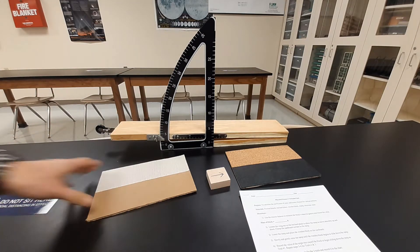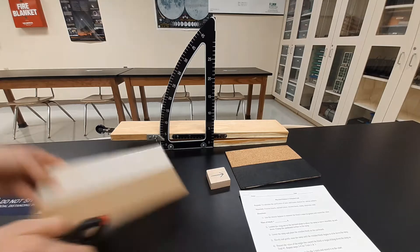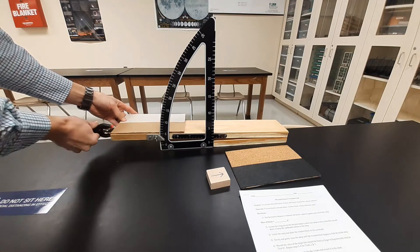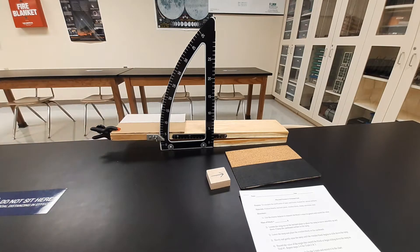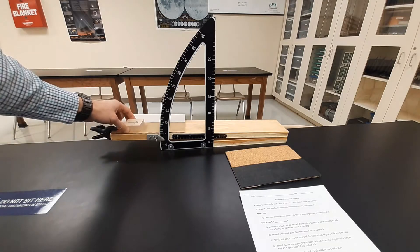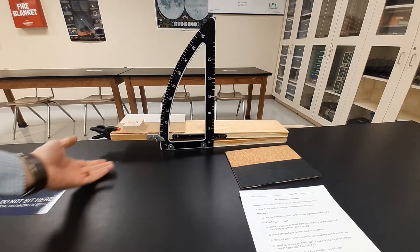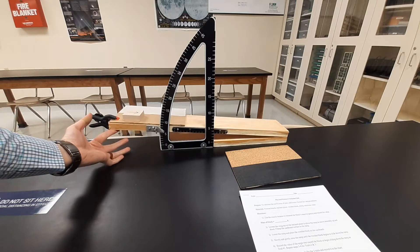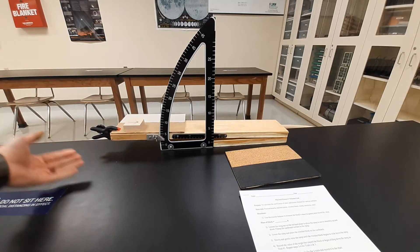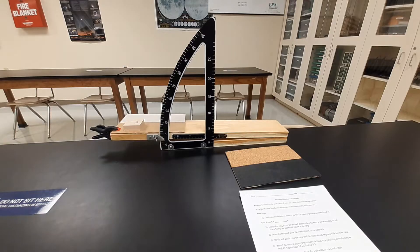So what we're using first is our cardboard. I'm going to set it up here, take my little clamp, clamp it in place, put my block down. Now this very first part, we're going to look at static friction. We're going to figure out as I raise this incline up, at what angle does it actually begin to slide down the ramp?